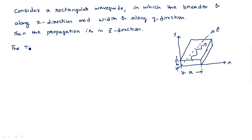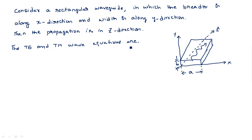The TE and TM wave equations are — before writing the wave equations, you should know what TE and TM are. TE is nothing but transverse electrical, and TM is nothing but transverse magnetic. In TE, the electric field Ez is zero and the magnetic field is non-zero. In TM, the magnetic field is zero and the electric field is a non-zero value.